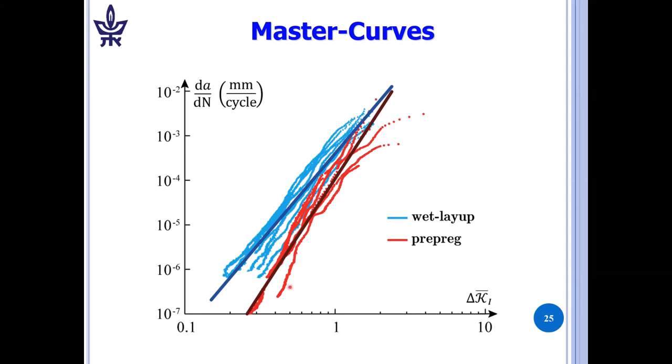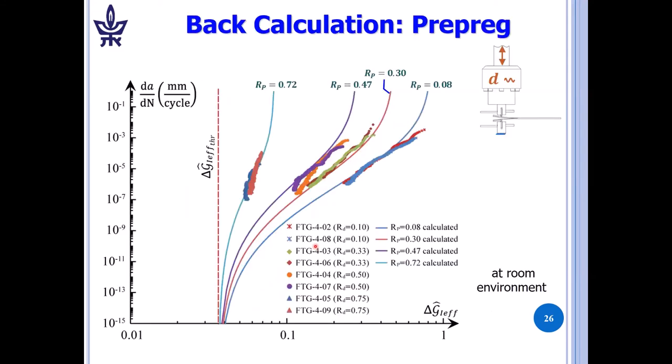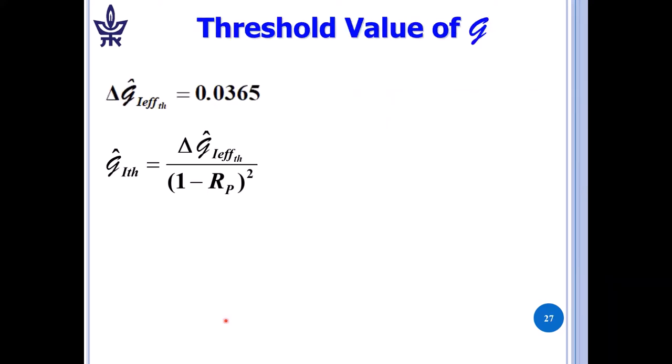If we compare our data, and this was the purpose of the talk to make the comparison, we see that for a given value of delta K, the wet layup, the propagation of the wet layup is faster than that of the prepreg. So the prepreg has the edge on the wet layup for fatigue delamination propagation. The rest of the points here are the data from the tests. So we have two master curves. Now we can back calculate, and now you can see the schematic curves. This is the data, and these are the schematic curves leading to a unified threshold value.